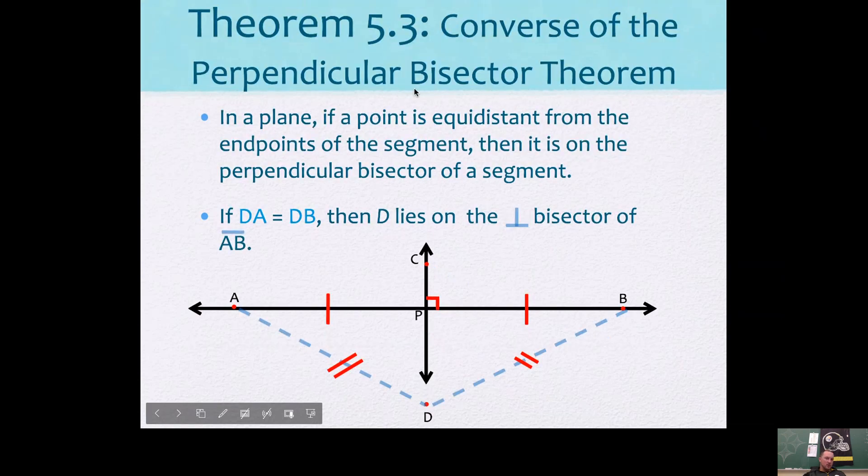Now, there's a converse of the perpendicular bisector theorem also. It's theorem 5.3. It tells you, let's say you have a perpendicular bisector. And let's say you have this point D that's just kind of floating out there, and you're not sure if it's on this perpendicular bisector or not. You can determine if it is. If the distance from D to A is the same as the distance from D to B, then this point D must live on this line, even though it's not shown to live there.